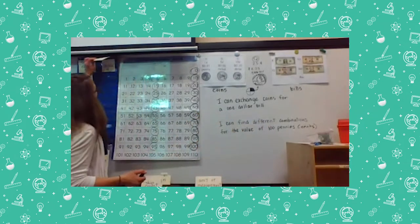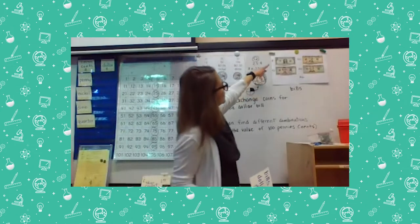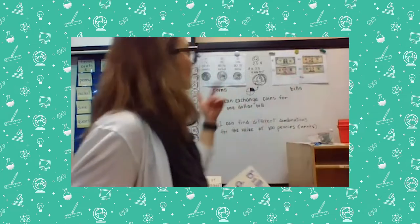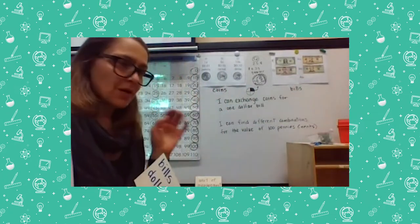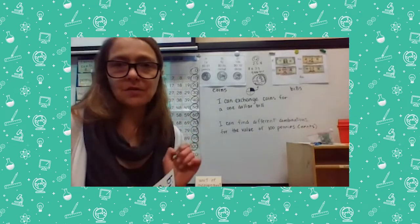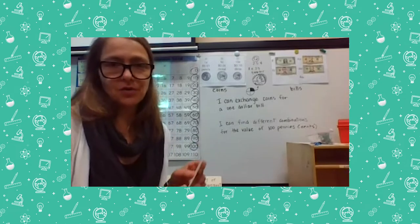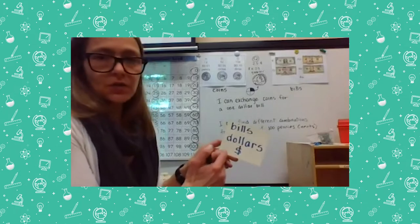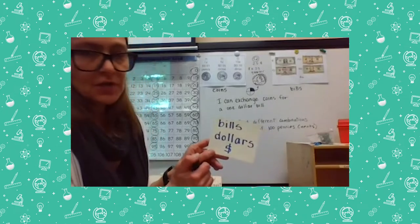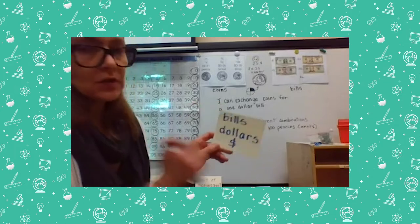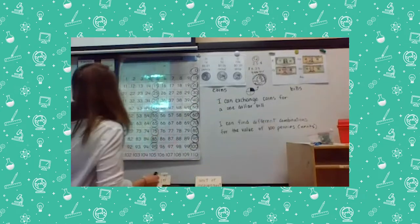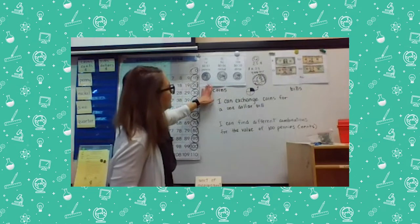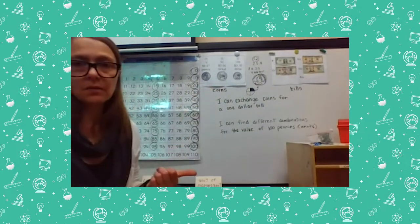And then we have the bills. We have one, five, ten, twenty — and then we have a hundred dollar bill, which I don't actually have one of those to show you. But you will have some in your math materials that you can cut out to use for this game. Bills are measured in dollars, and the symbol for dollars is an S with a line through it. We have our dollars, which is the paper money, and then we have our coins — our cents — which is the metal.